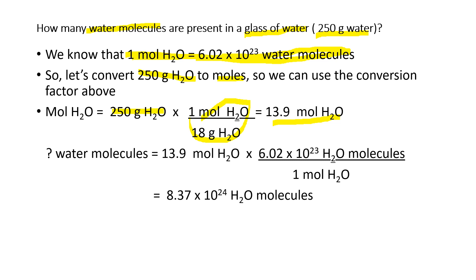This means that 1 mole of H2O weighs 18 grams, so 13.9 moles of H2O has a mass of 250 grams. Now that we know the number of moles, we can calculate the number of water molecules using the conversion factor that 6.02 times 10 to the 23rd water molecules is in 1 mole of water. So 13.9 moles of water times 6.02 times 10 to the 23rd water molecules divided by 1 mole gives 8.37 times 10 to the 24th water molecules.